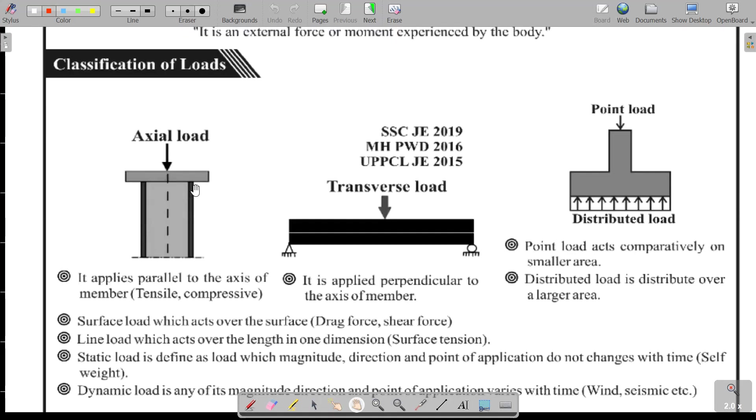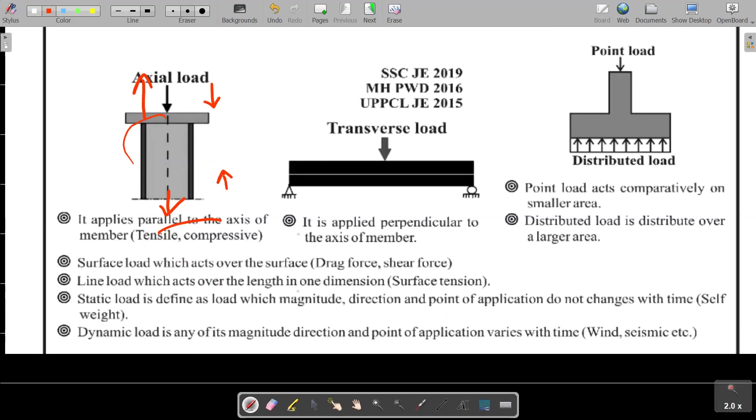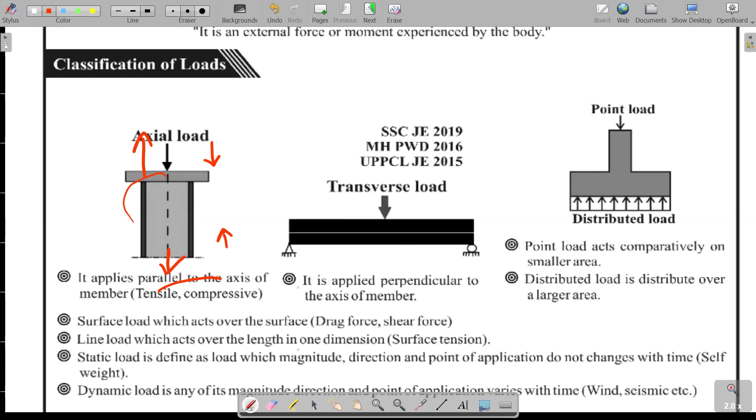Axial Loading means it is applied parallel to the axis of the member. For example, if this member is compressed, it is compressive loading, whereas this loading is tensile loading. Cable is nothing but a tensile member.